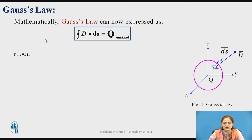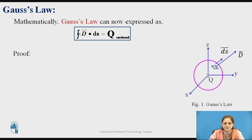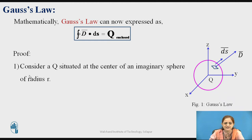Now we will see the proof: how to prove that Q enclosed equals D-bar dot dS-bar, which equals the electric flux. For that, consider a sphere placed with its center at the origin, and a charge is also placed at the origin, with radius equal to r. For this sphere, consider a small differential area dS-bar. D-bar is normal to that area.